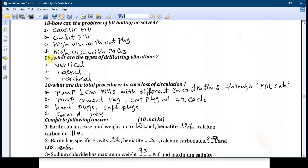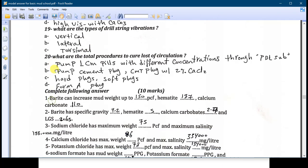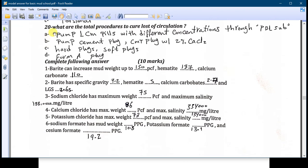Number nineteen: what are the types of drill string vibrations? Vertical, lateral, and torsional. Number twenty: what are the total procedures to clear the loss of circulation? Number A: you will bump LCM pills with different concentration through the DDV sub. Number B: you have to bump cement the block or cement the block with 2% calcium chloride. Number C: hard block or soft blocks. Number D: foam block.